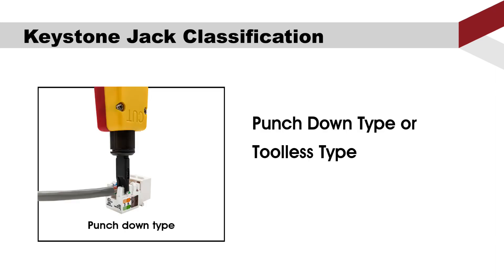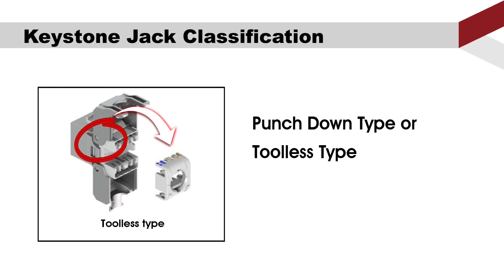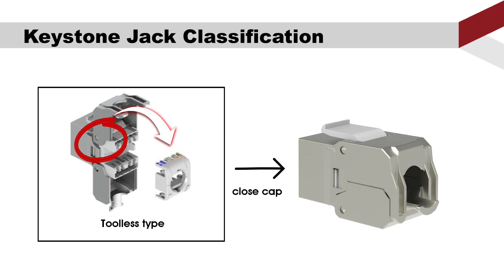The second classification is determined by whether a punch down tool is needed during installation. If yes, it is a punch down type. If not, it is a tool-less type. Normally you will see a mechanical design on the back of the Keystone Jack which is used to close and press. When you press down and close the cap, the mechanical design will help punch each wire into the slots.